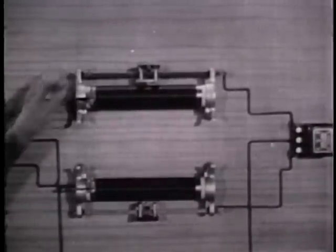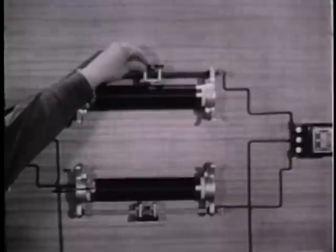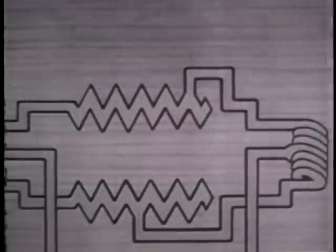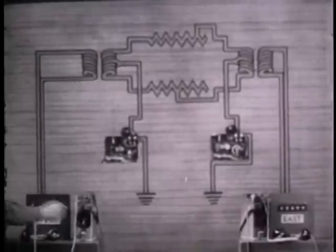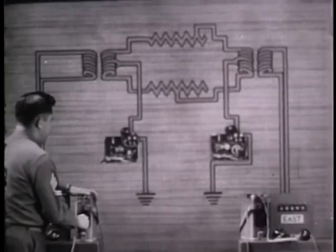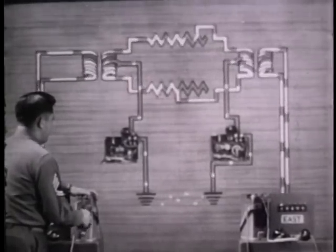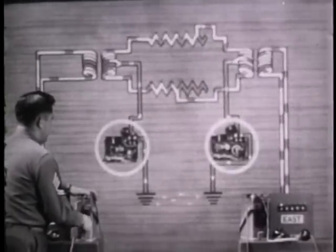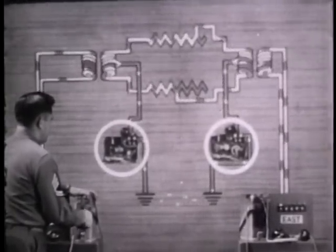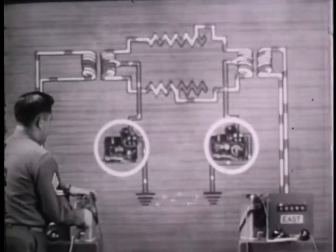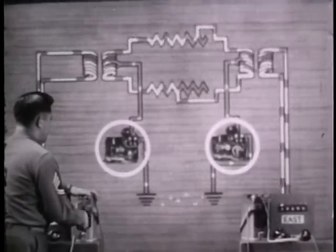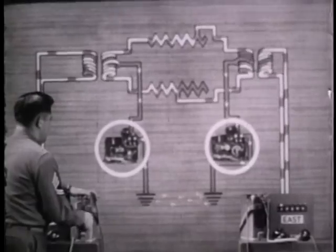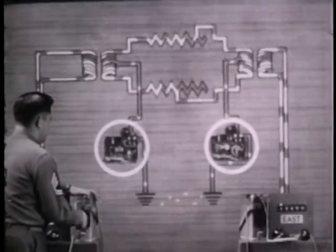But sometimes, the resistance of one wire is greater than that of the other. A bad splice in one wire can cause this. Now the circuit is unbalanced. Because of the unequal resistances, ringing current flows through the telegraph sets. But unless the unbalance is great, the amount of diverted ringing current will be too small to actuate the telegraph relays.